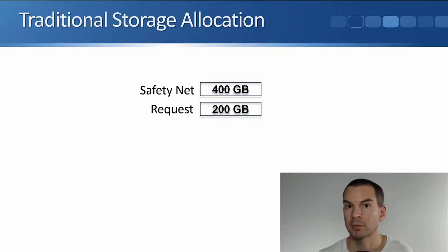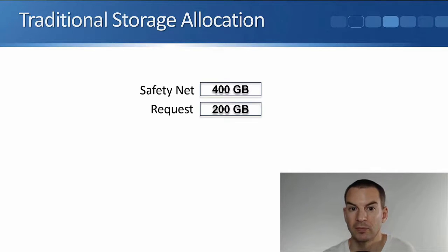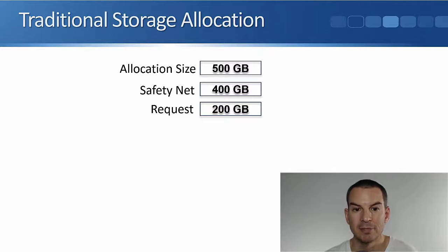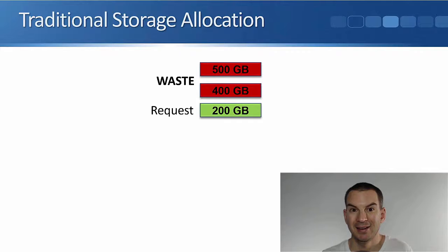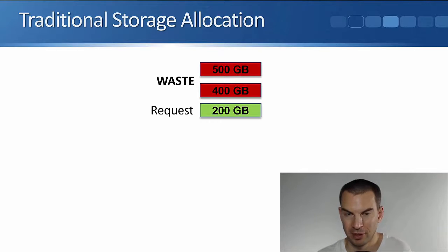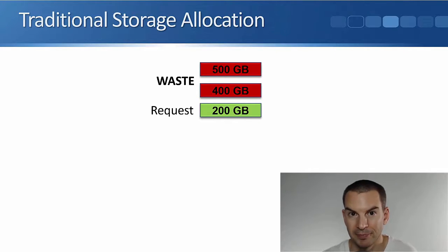But maybe on this particular storage system, 400 gigabytes is not available as an allocation unit size. The closest one is 500 gigabytes. So the server team requested 200 gigabytes and I end up provisioning 500 gigabytes of physical disk space. That means 300 gigabytes is paid for but not actually being used — it's wasted.